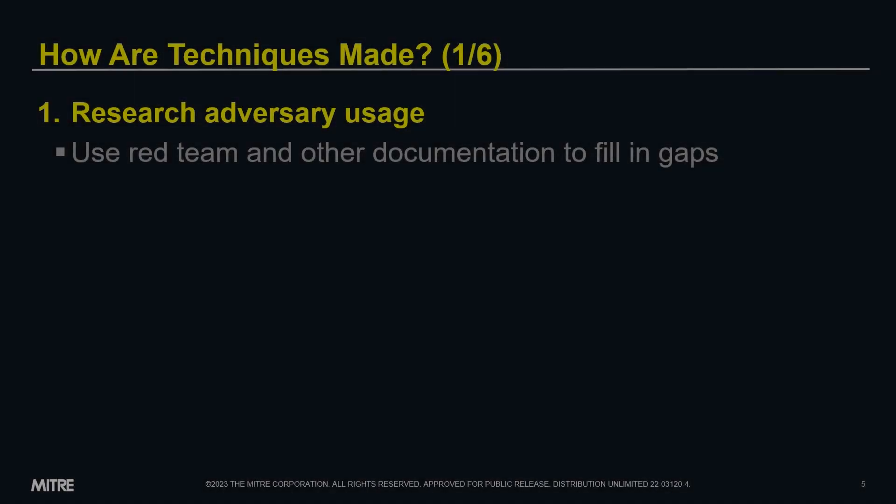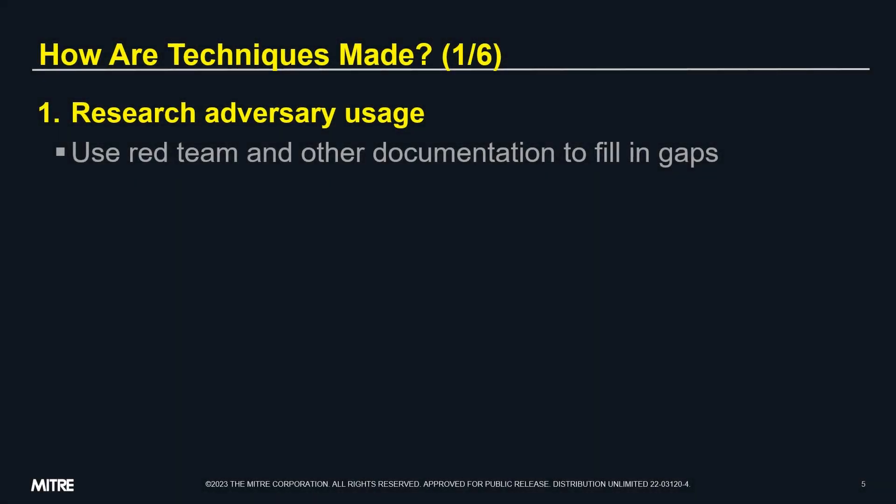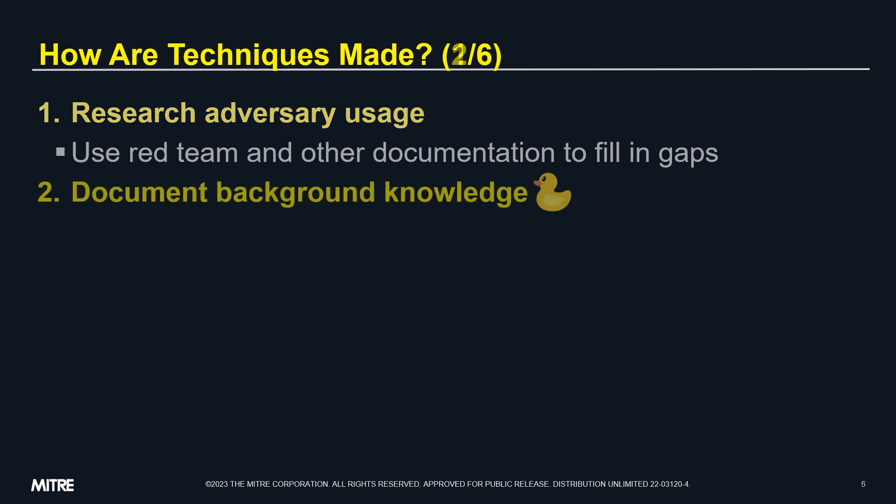Going into a little bit more detail about how the ATT&CK team develops techniques, we can define a six-step process starting with step one: researching the adversary behavior as well as related offensive tradecraft. Step two involves researching and documenting technical background and details. Our goal with ATT&CK technique descriptions is that they can be easily read and understood by anyone, including a rubber ducky.